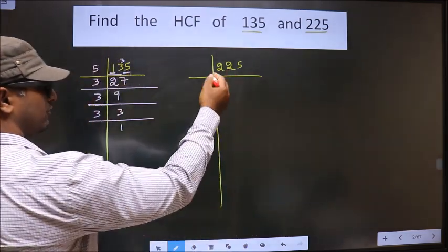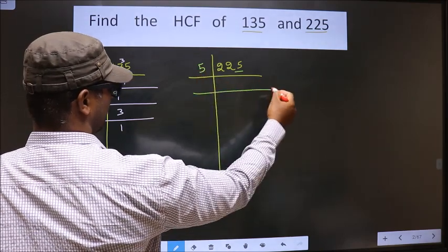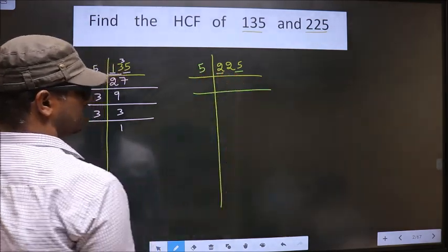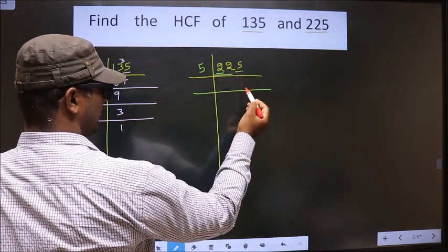Now, here for this number, the last digit is 5, so we take 5 here. Now, the first number is 2. 2 is smaller than 5, so we take two numbers, that is 22.